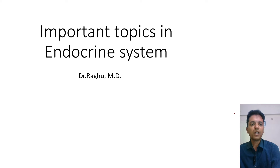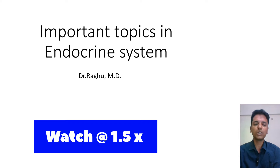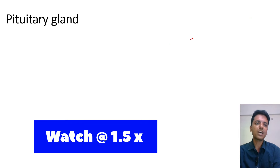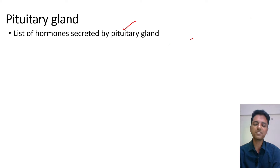Hello there, welcome back to my channel. Many of you have been asking me to put up the important topics which are asked from the endocrine system, so let's quickly go through them. First, let's start with the pituitary gland. The easiest question they can ask you is to list the hormones secreted by the pituitary gland — you are supposed to list hormones from both the anterior as well as the posterior pituitary.